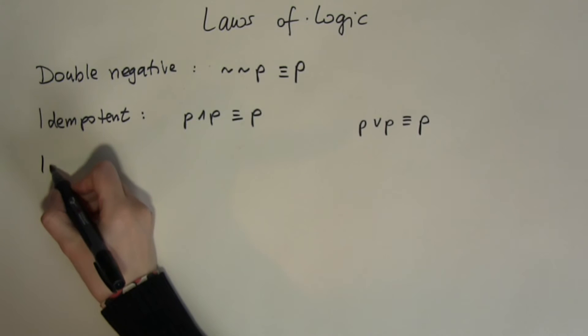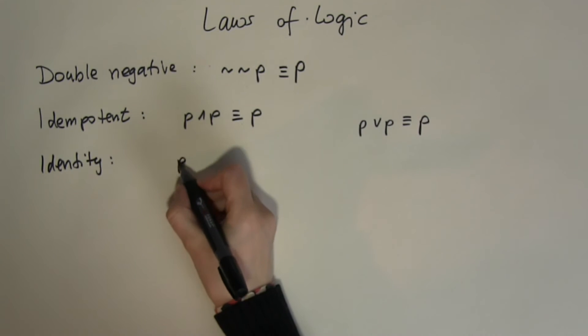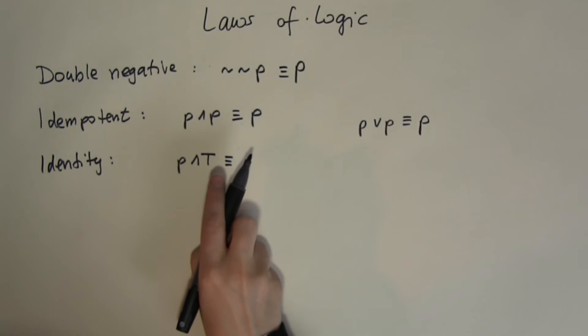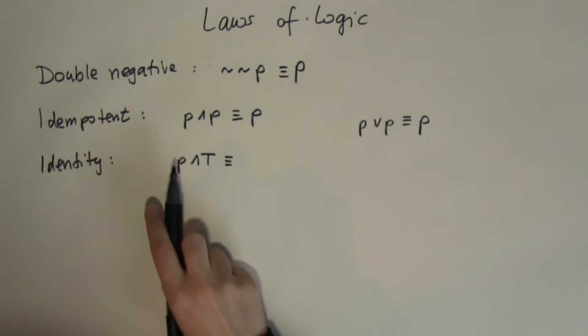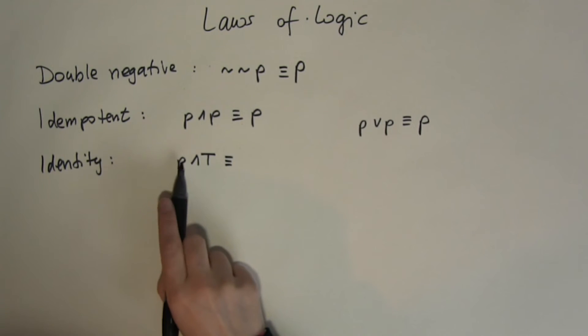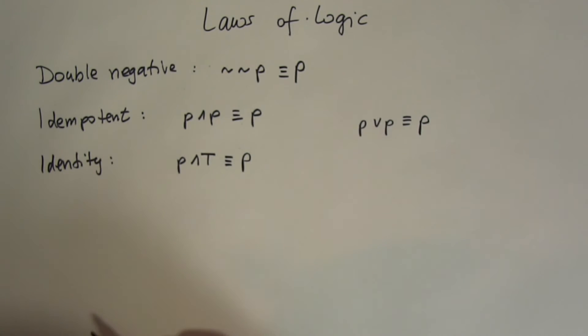Let's look at the identity law. This law talks about what happens if I combine together an input with a true or a false value. So P and true, what is that logically equivalent to? If P is true, true and true will give me true which was the same as P. But if P is false, false and true gives me false. So it doesn't matter if P is true or false. If I combine together P with a true using the AND operation, I'm always going to end up with what P was. This true doesn't really make any difference.